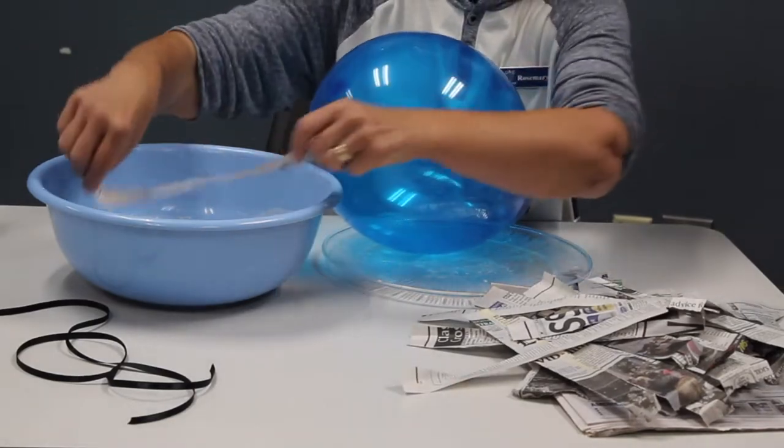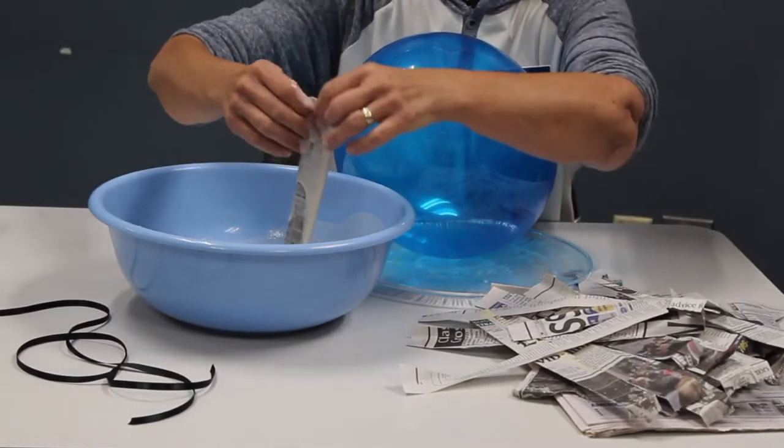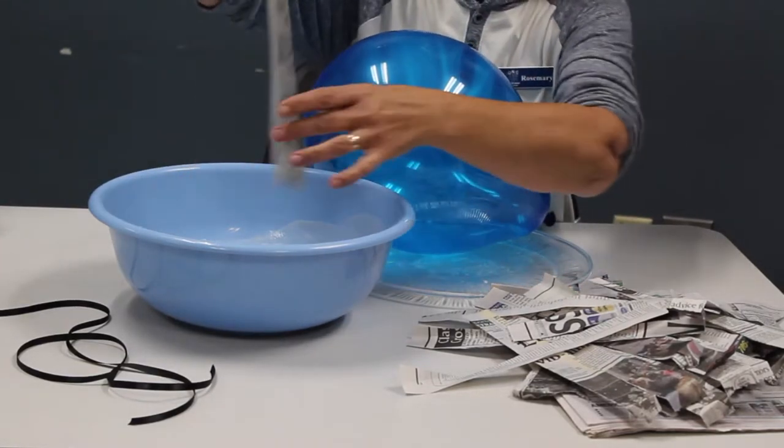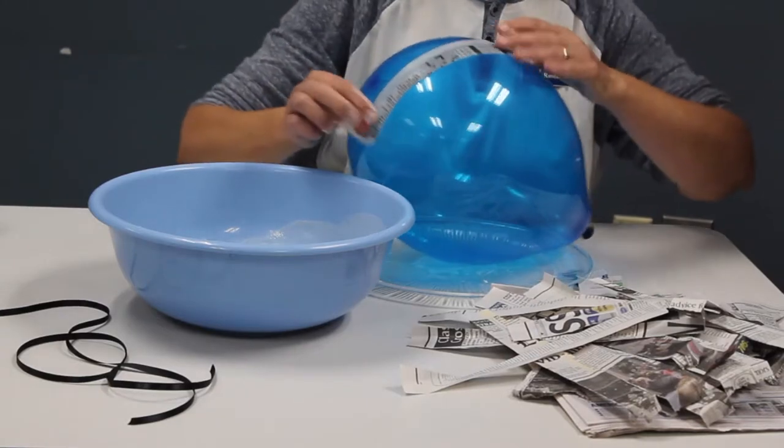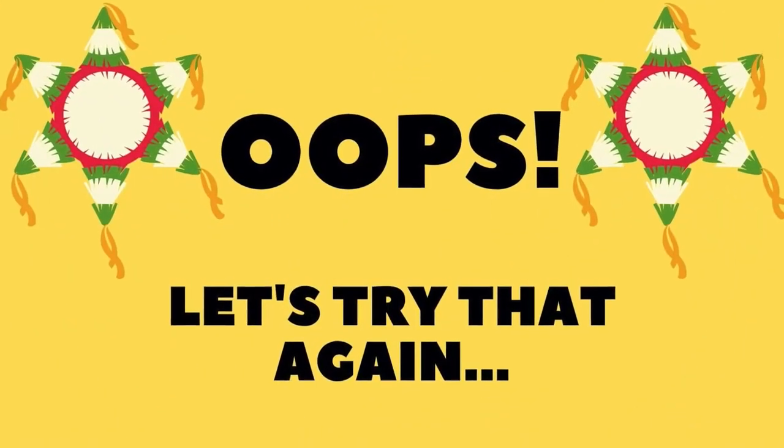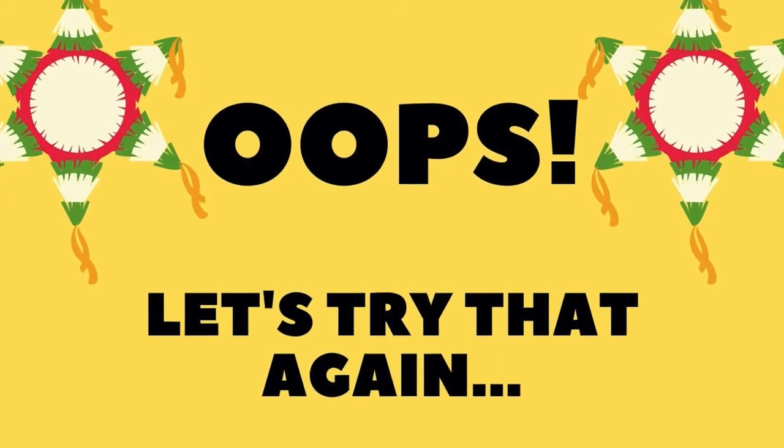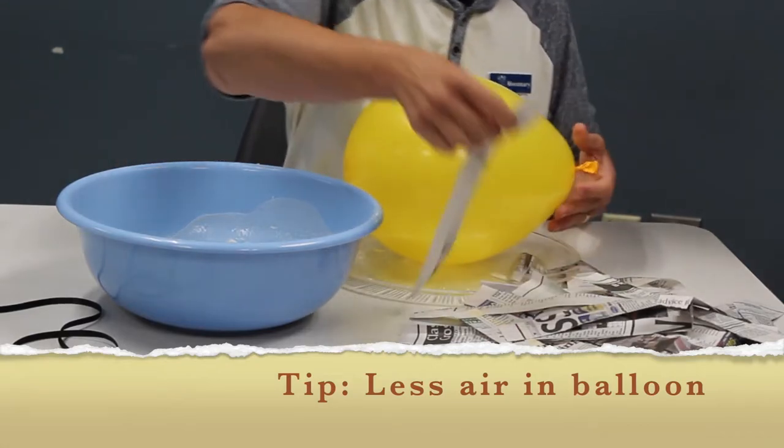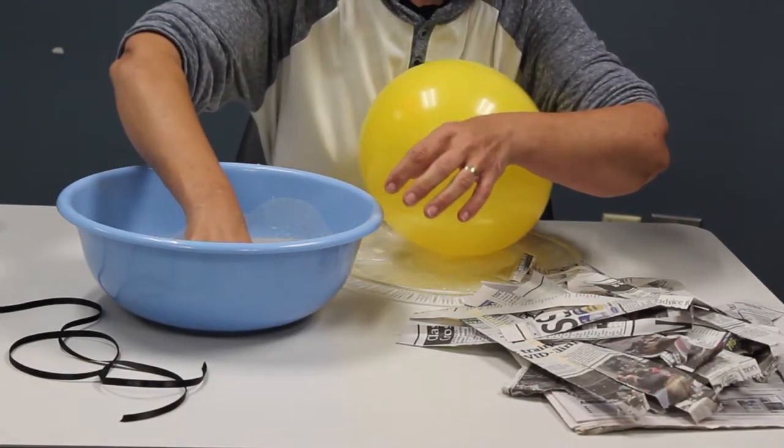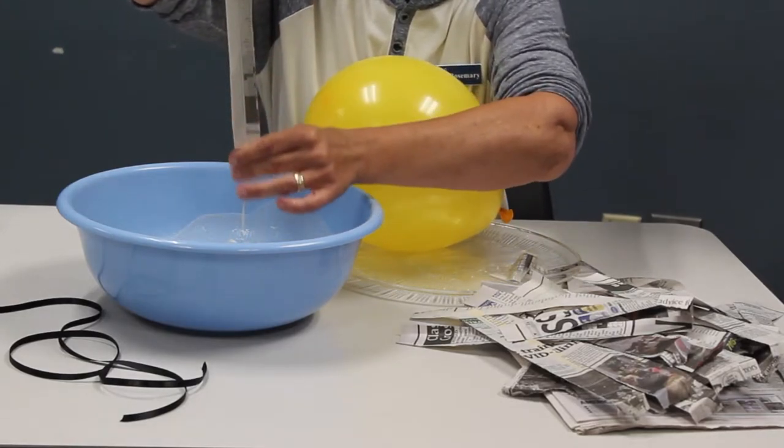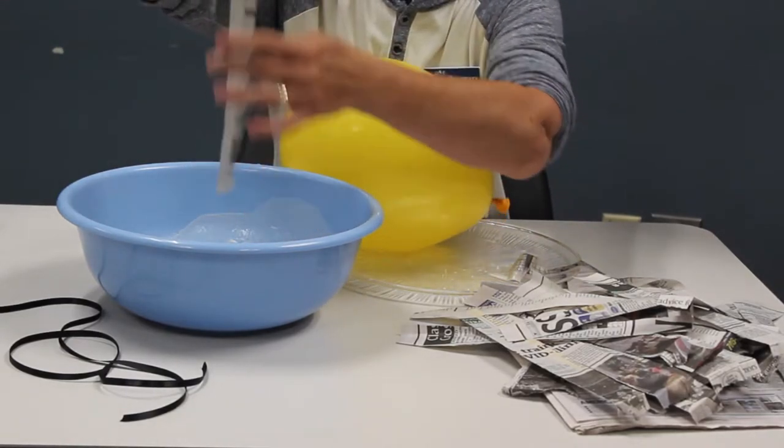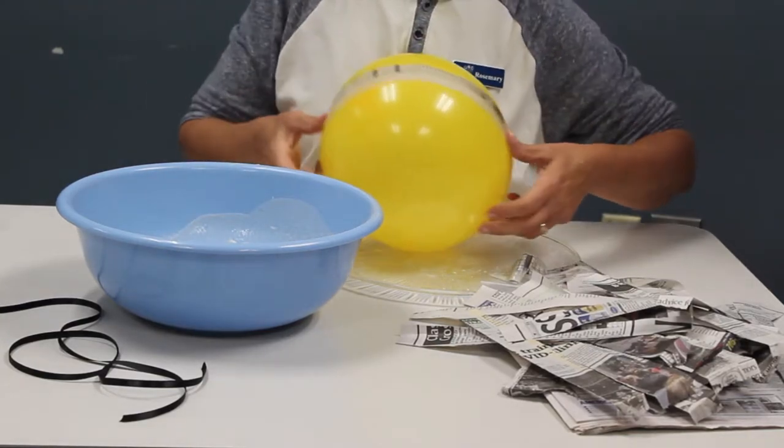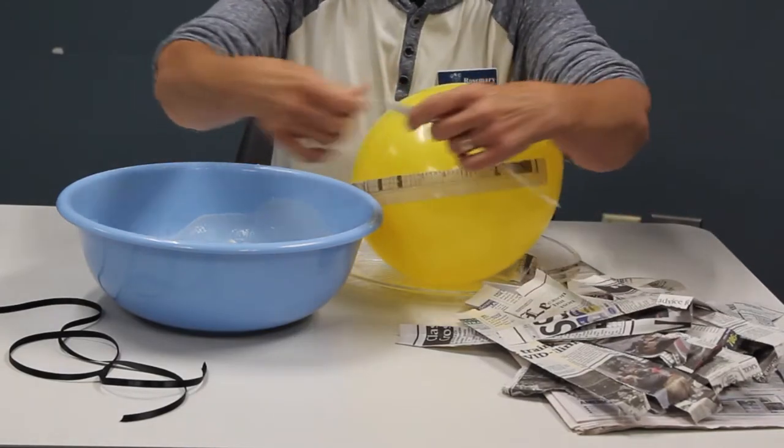So you're going to take the strips and you're going to put them in the papier-mâché paste. And you just want to set it so that it's not real dripping off. So my first balloon popped, so maybe you don't want to blow it up so much. You're going to take the strips and put them in the paste and just wipe off the excess. You want both sides to get the paste on it. And you're just going to start placing them on the balloon randomly.